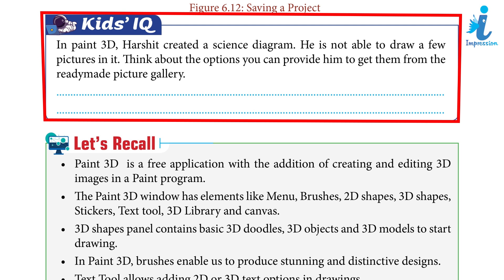Get thinking: in Paint 3D, Hershel created a science diagram but is not able to draw a few pictures in it. Think about the options you can provide him to get them from the ready-made pictures gallery.